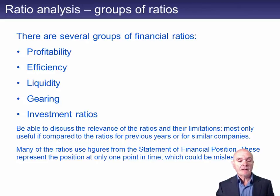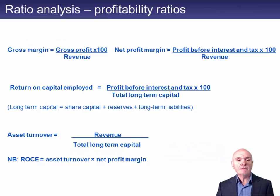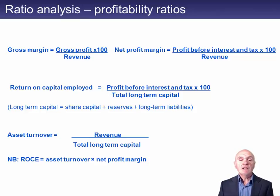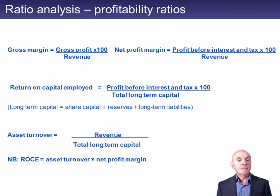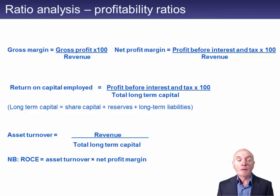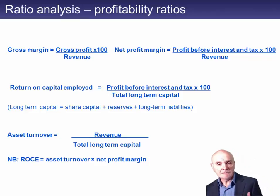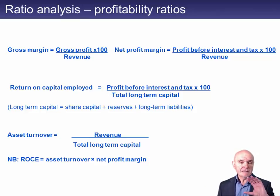Looking at profitability ratios, a very important one is the gross profit margin — that's your gross profit over the revenue. I always think of this as the mainspring of a company. If you don't have a decent gross profit, it's very hard to end up with a decent net profit. The net profit margin, or operating profit margin, is the operating profit before interest and tax divided by revenue. It's sometimes worth examining why the gross profit margin is staying healthy but the net profit margin has fallen.